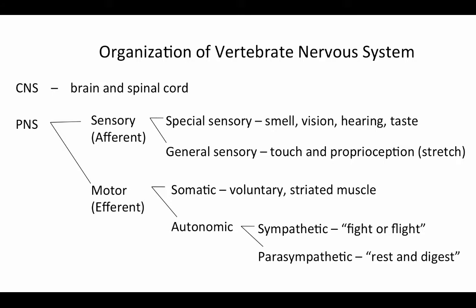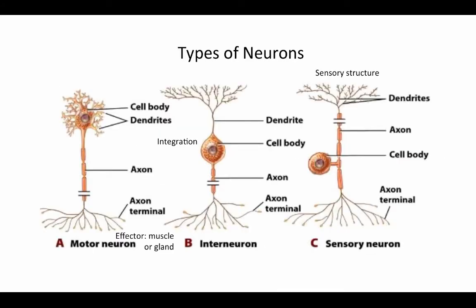To communicate information from the outside world, process it internally, and produce an appropriate motor response, we have three different types of neurons. Motor neurons are generally multipolar neurons, meaning the cell body is associated with many different projections, and they interact with some kind of effector — a muscle or a gland — at their terminal. Interneurons are the communicating neurons involved in integration; they can receive information from sensory neurons or other interneurons and send it to motor neurons or other interneurons, forming long chains or relays.